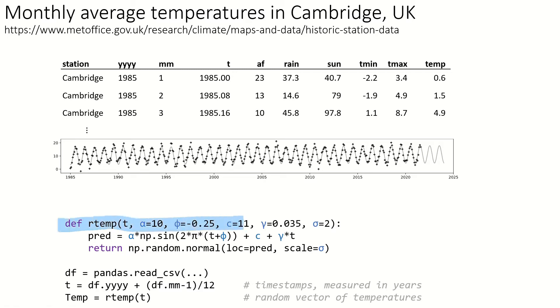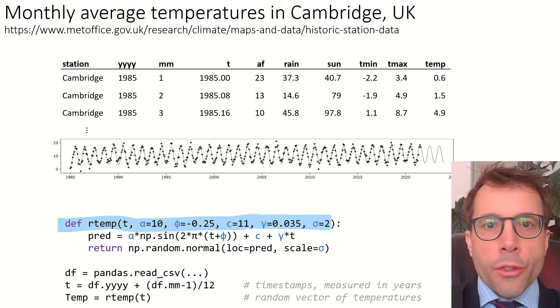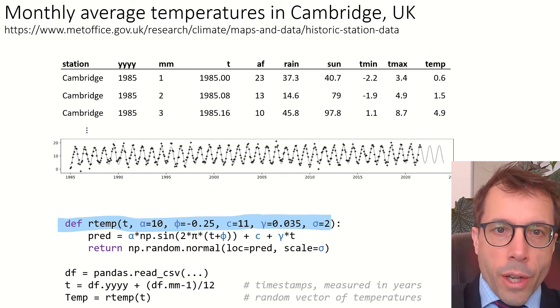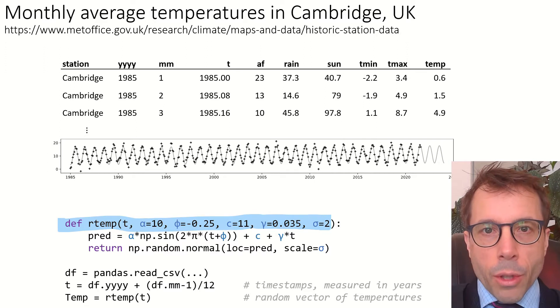The job of this function, RTEMP, is to generate a random temperature for timestamp T. It's also got some magic numbers for its other arguments. Four of them describe the shape of the sinusoid I want to use. There's alpha, the amplitude, phi, the phase shift, c, the overall average level, and gamma, the rate of temperature increase.